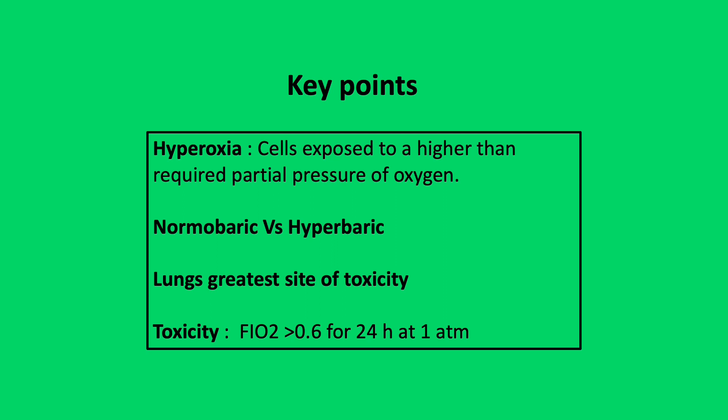Oxygen transfer between the inspired gas and the mitochondria is mainly by diffusion down a pressure gradient. The highest partial pressures of oxygen will always be in the lungs, especially the alveoli, as the conducting areas are protected, and thus the lungs are the greatest site of toxicity. The total dose of oxygen is the risk factor for oxygen toxicity and it is associated with FiO2 greater than 0.6 for more than 24 hours at one atmosphere.